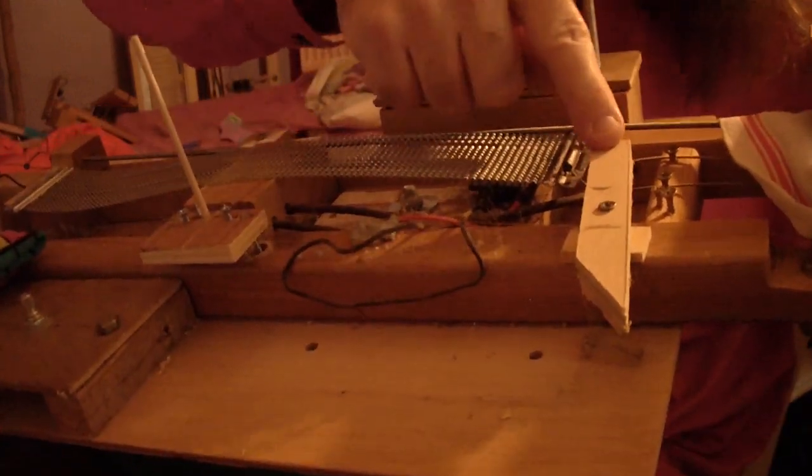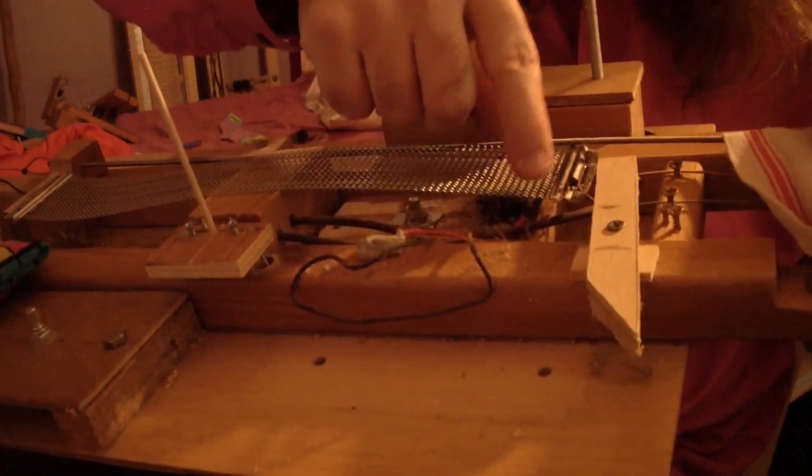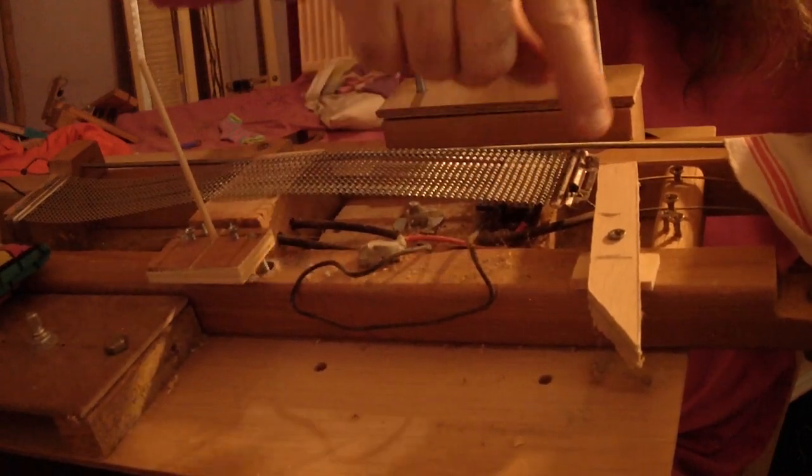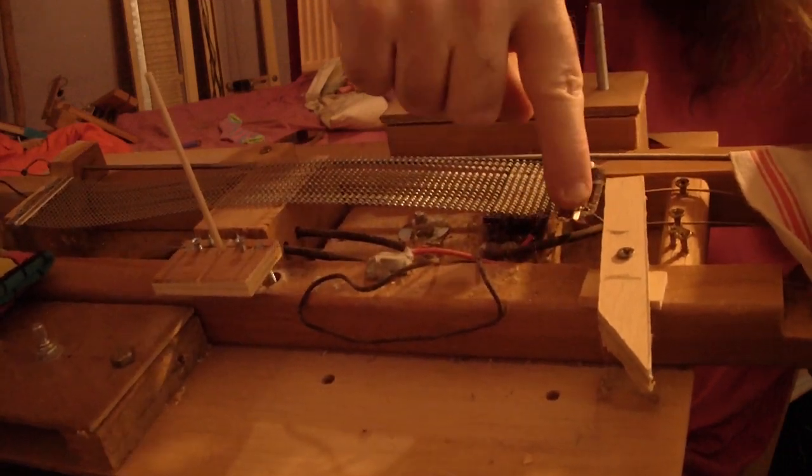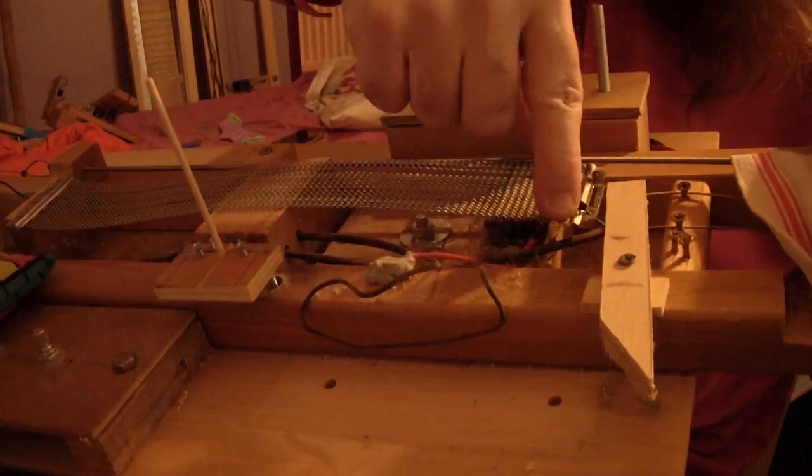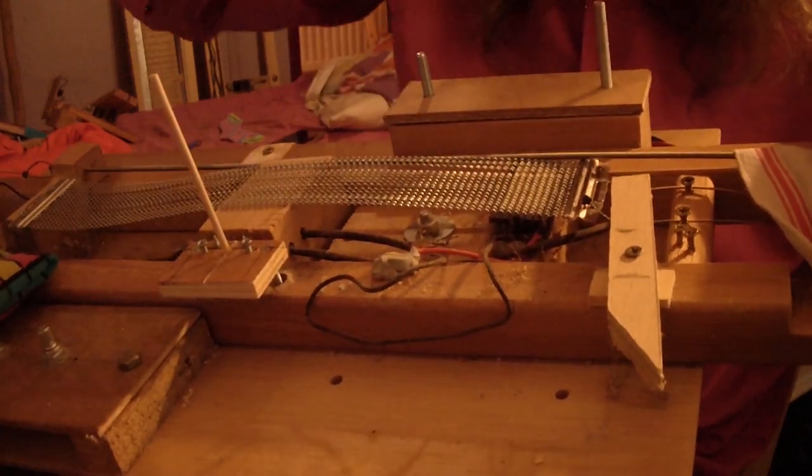I added this bit of wood here because the snare wire wasn't quite flat enough, because it wasn't pressed against it enough. So I put this here that presses against the string, which is connected to the snare wire, and thus presses the snare wire down against the pickup. Could probably be done a lot more neatly.